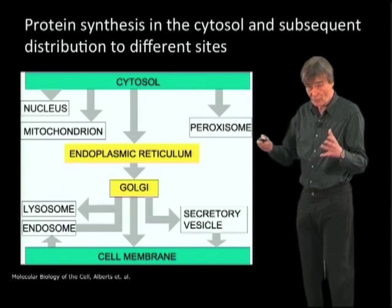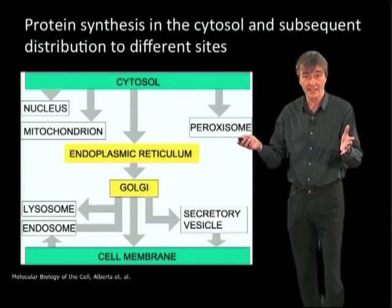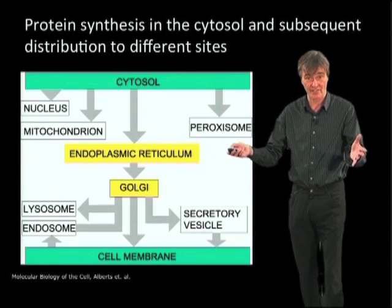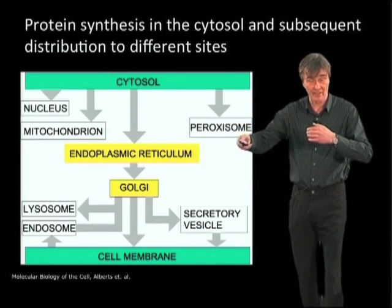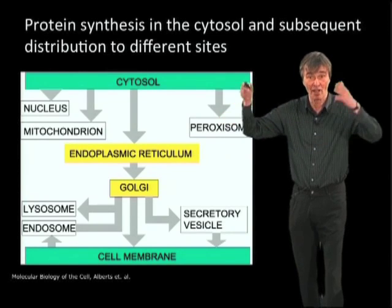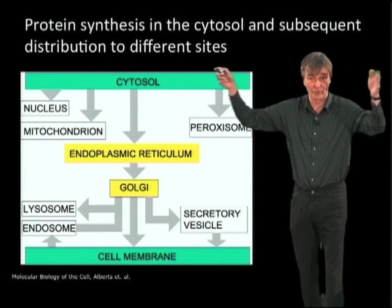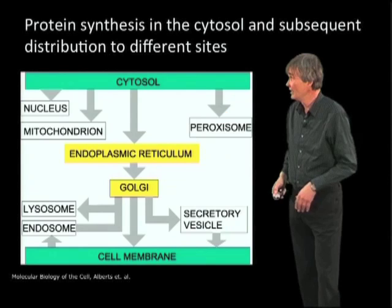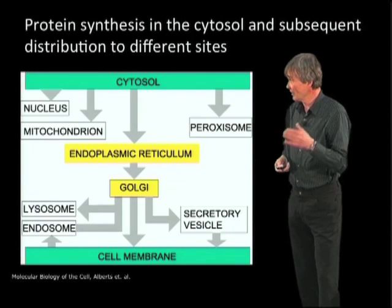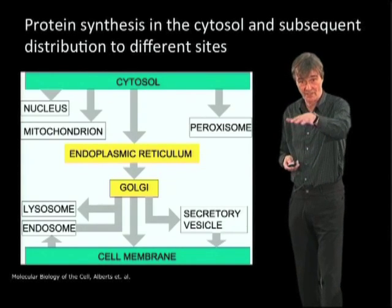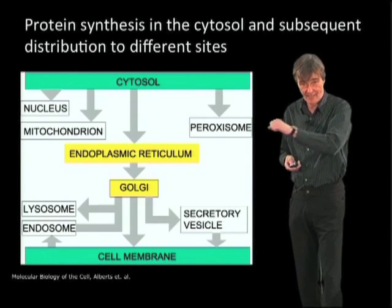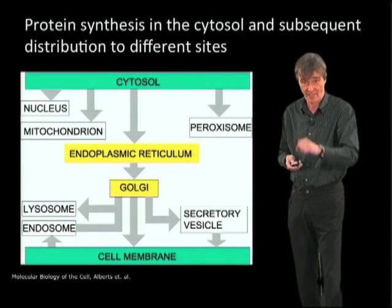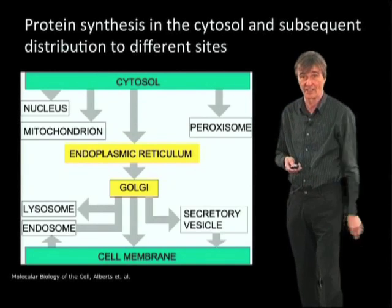Proteins are made in the cytosol in cells, and then they have to be distributed to different destinations where they carry out their functions. There is also a very important pathway starting in the endoplasmic reticulum, over the Golgi, endosomes, cell surface, or for export out of the cell.